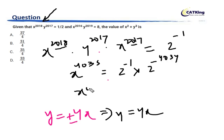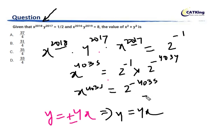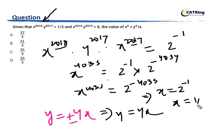So X to the power 4035 is equal to 2 to the power minus 4035. From here we clearly know that X is equal to 2 to the power minus 1, so X equals 1/2.